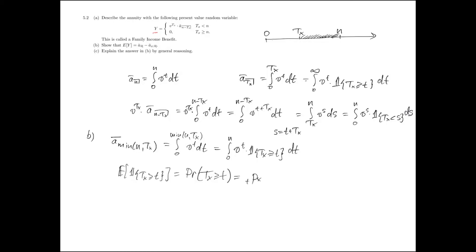we can obtain that the expected present value of the term continuous annuity is an integral from 0 to n v^t tpx dt.